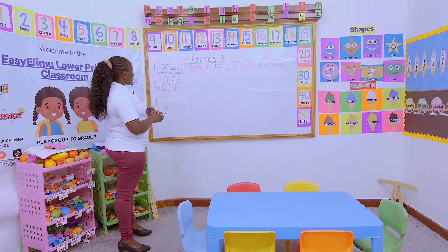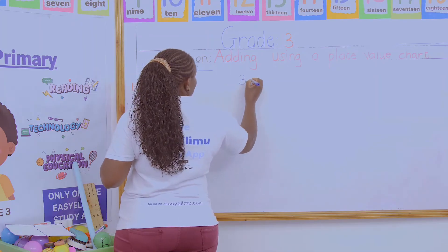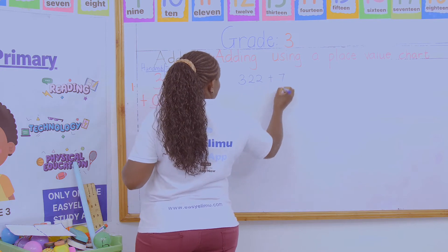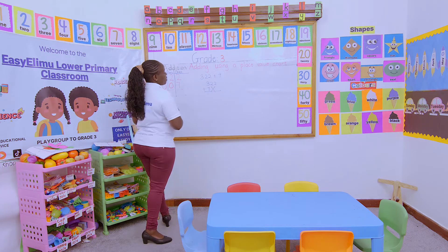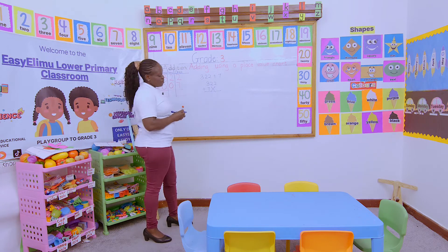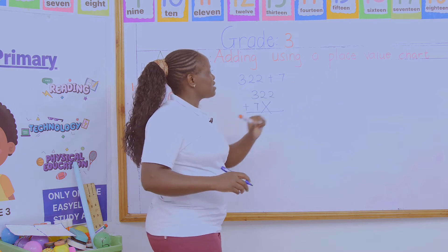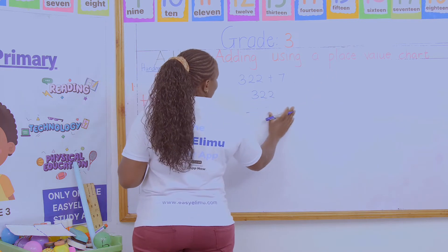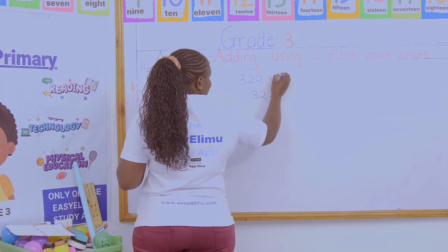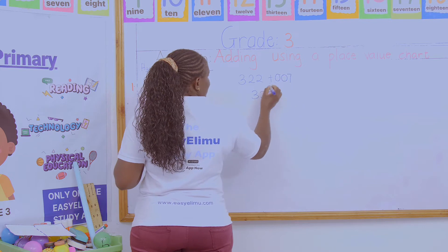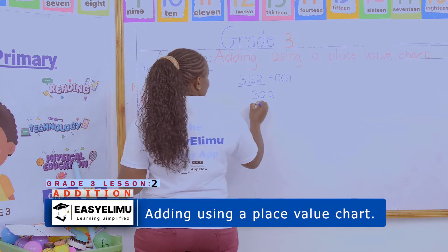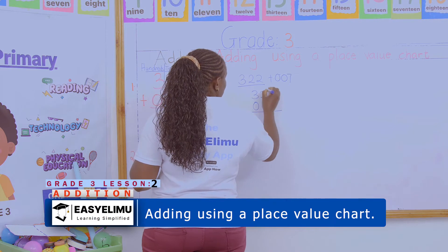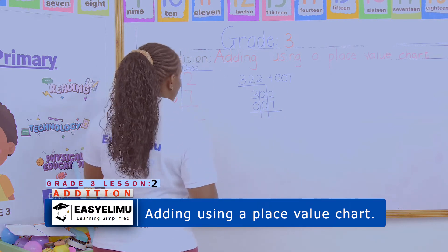When you've been told to add 322 plus 7, avoid writing it without aligning properly. Some will just write 322 plus 7 side by side — and this is very wrong. Why? Because you don't know the exact position of that number 7. That is why it is very important to use the place value chart. Indicate 307 here — put the same number of zeros before 7 to make it equal to the first number, so that you fix number 7 in the correct position.